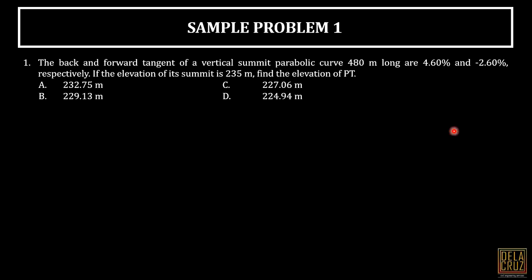Let's take a sample problem. The back and forward tangent of a vertical summit parabolic curve 480 meters long are 4.6% and negative 2.6% respectively. If the elevation of its summit is 235 meters, find the elevation of PT.